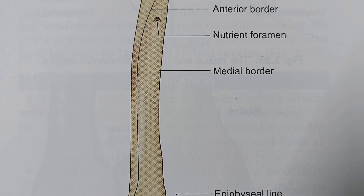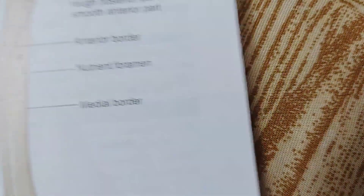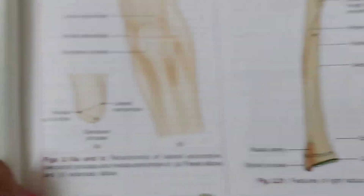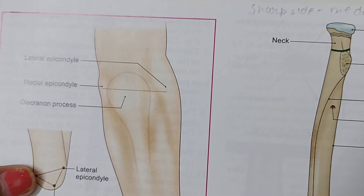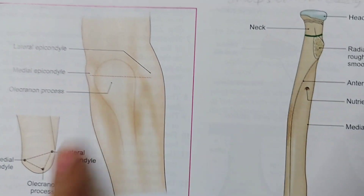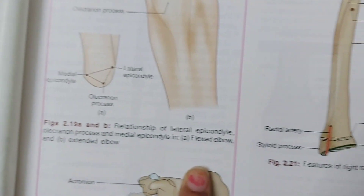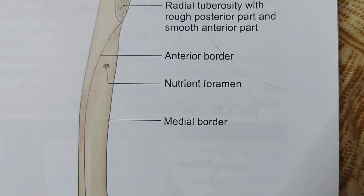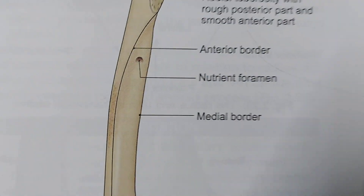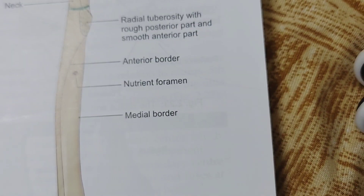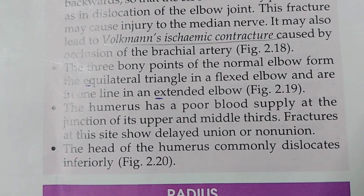This is shown in the diagram here — you should also refer to your book for a clearer image. The triangle is shown in the flexed position, and the straight line is shown in the extended position. Let's move on to the next point.